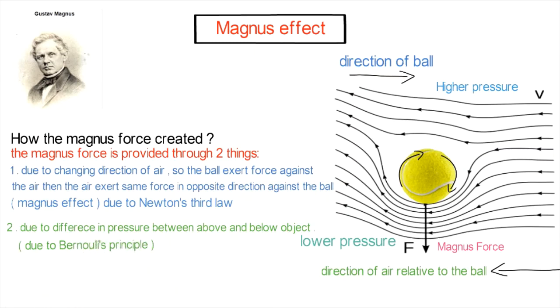The second thing providing the Magnus force is the difference in pressure between the two sides. The air on the bottom side has higher velocity than the upper side, so according to Bernoulli's principle, the pressure is inversely proportional to the velocity. This pressure difference also provides the Magnus effect.